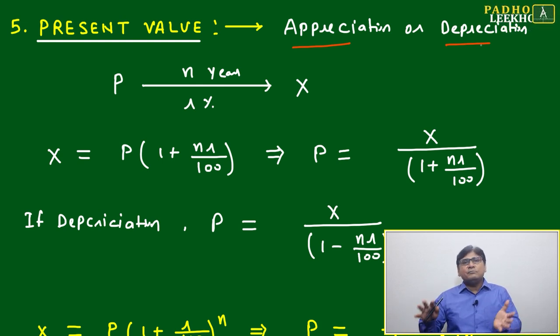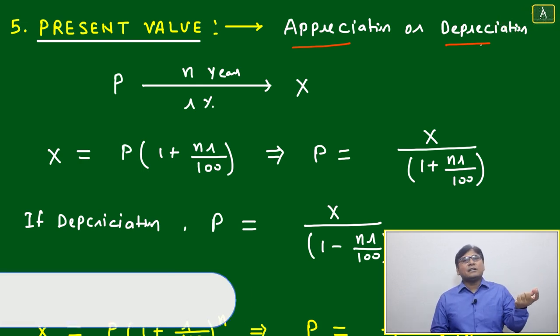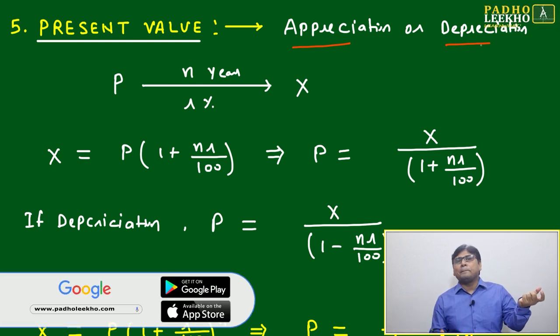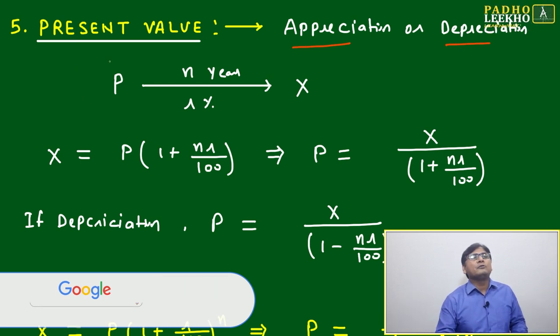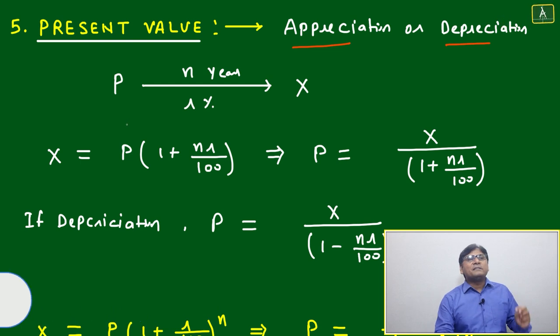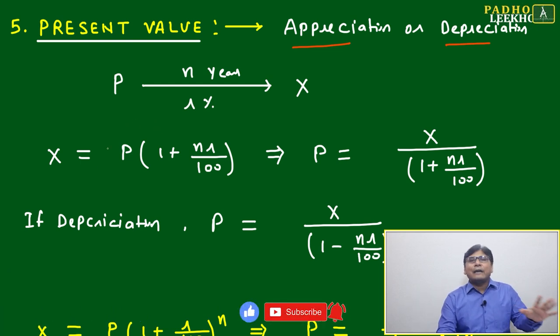Or if it keeps on depreciating, means this value is coming down. We can say the discussion we have started is value of money with respect to time - whether it is increasing or decreasing, whatever happens, we will be able to calculate using present value. Present value is nothing but just a reverse calculation of compound interest.